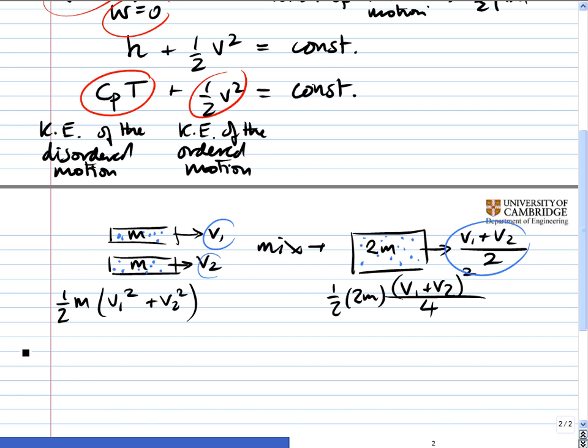So let's look at the change in the kinetic energy of the ordered motion. Now, this is equal to a half m v₁ squared plus v₂ squared, which is what it was before, minus a half times 2m v₁ plus v₂ squared over 4.